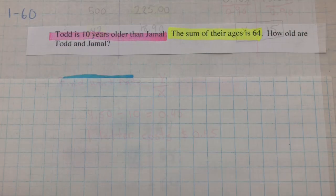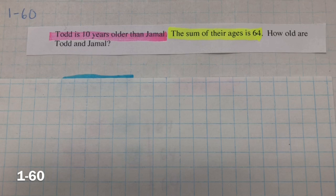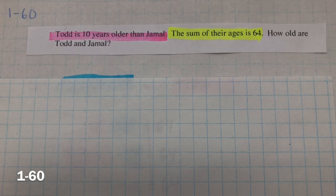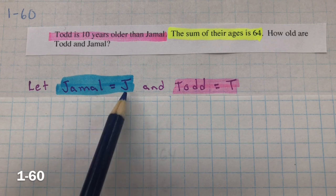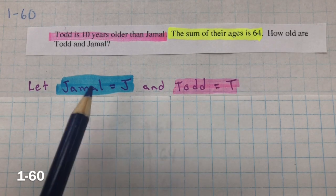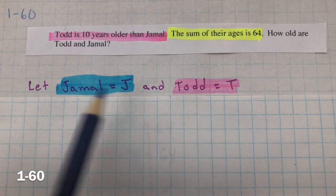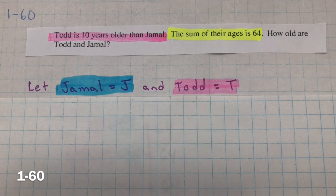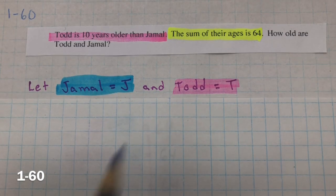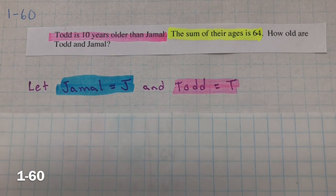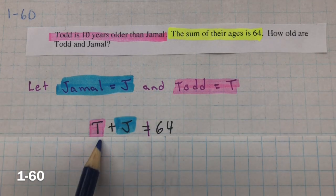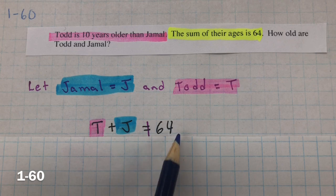In 160, Todd is 10 years older than Jamal. The sum of their ages is 64. How old are Todd and Jamal? Well, let Jamal equal j and Todd equal t. So, I'm giving variables that represent Jamal and Todd. And we know that the sum of their ages is 64. So, Todd plus Jamal equals 64.